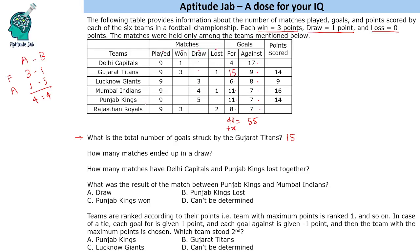For some teams it is straightforward to calculate. Adding known wins and draws: 3 plus 1 is 4, so the losses will be 5. Then 4 plus 1 is 5, so losses are 4. And 3 plus 2 is 5, so losses are 4. All teams played 9 matches. We can also find the points: 9 points for one team, and another ends up with 9 plus 4 giving 13 points.